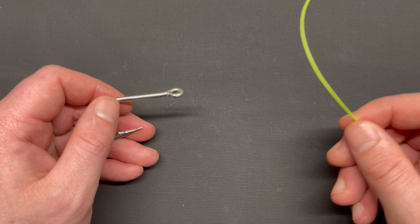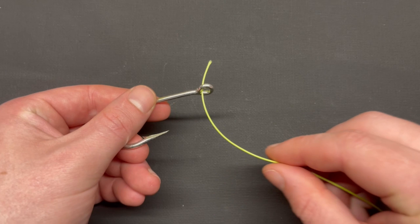So getting right into it, I'll first demonstrate this knot using high contrast line, and then I'll tie it again with very heavy leader so you can see that as well. The first step is to take your tag end and run it through the eye of your hook and give yourself a decent length of tag end to work with.